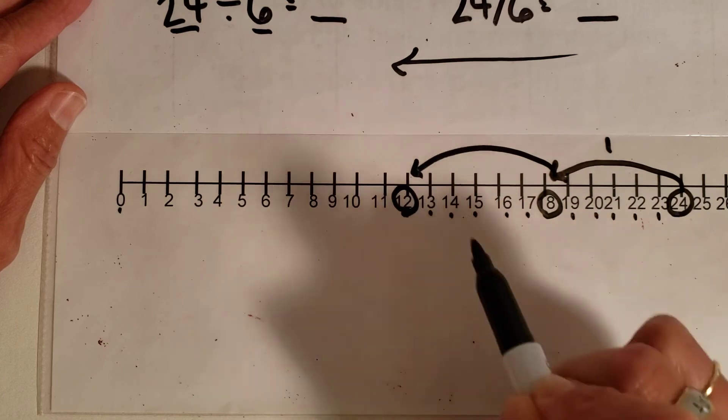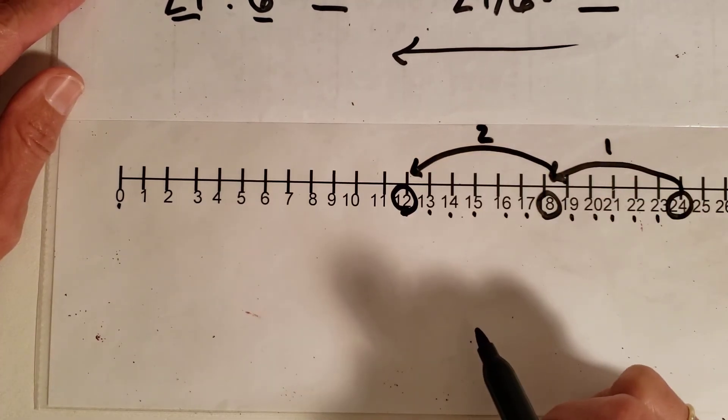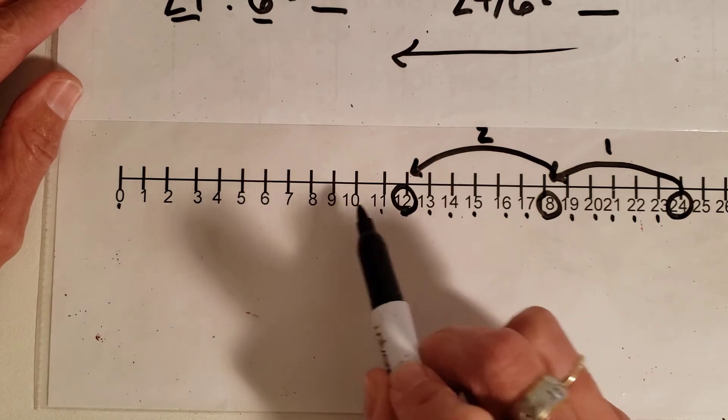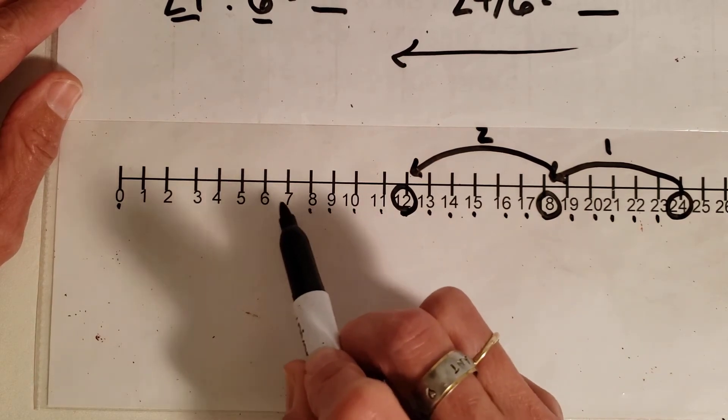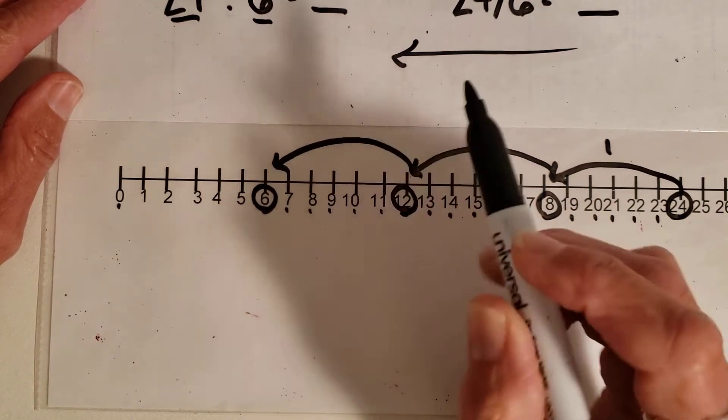My arrow is going backwards because I'm trying to make it to 0. I've done two hops so far. So 1, 2, 3, 4, 5, 6. I'm circling that and I'm taking another hop backwards.